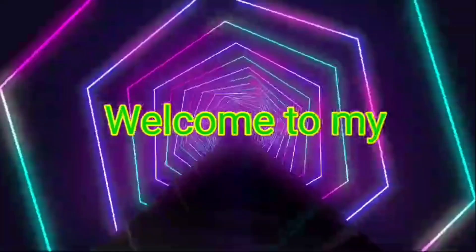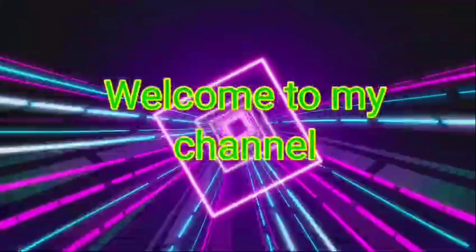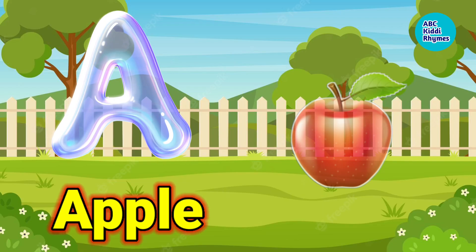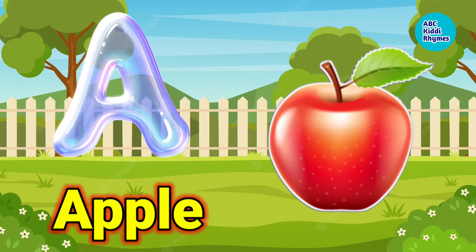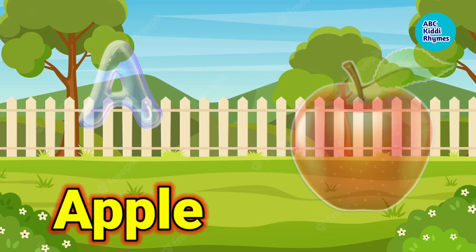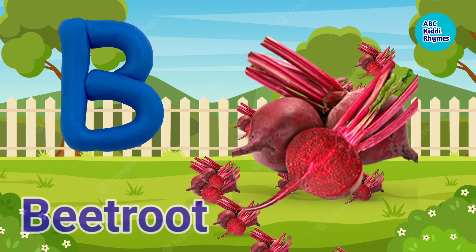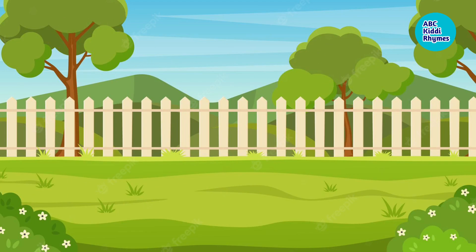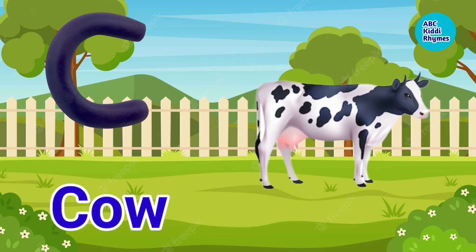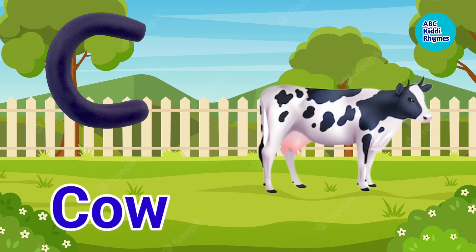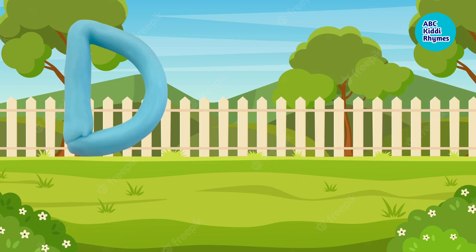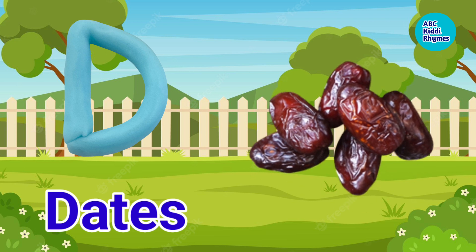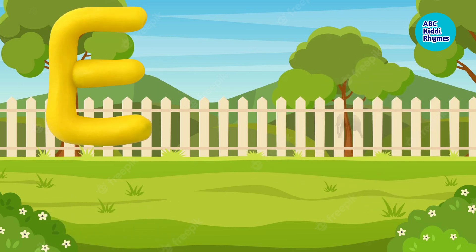Welcome to my channel ABC Kid Derives A. A for Apple. B for Beetroot. C for Cow. D for Dates.